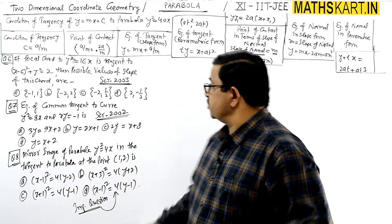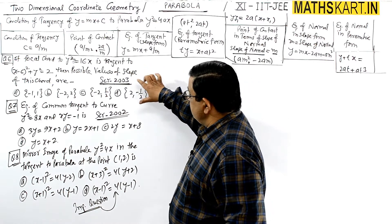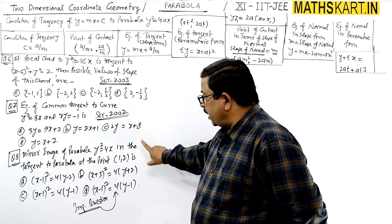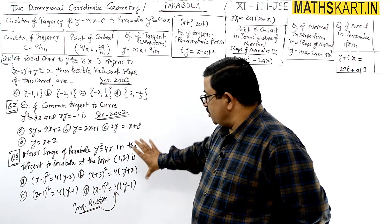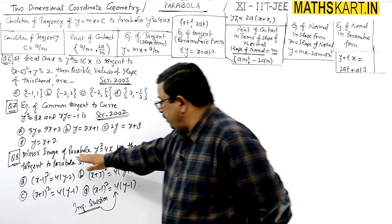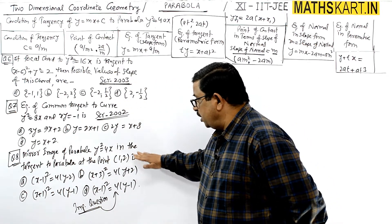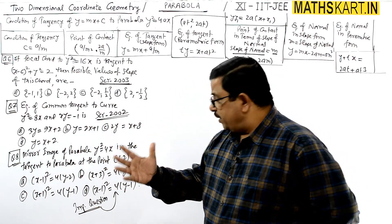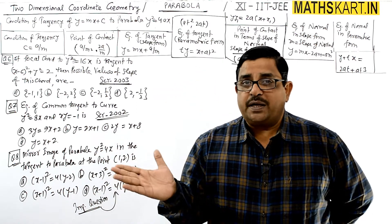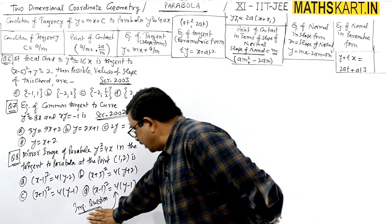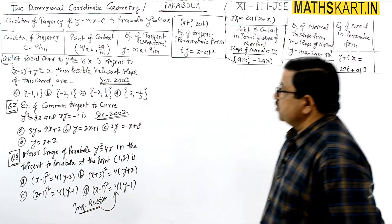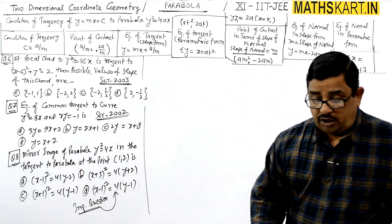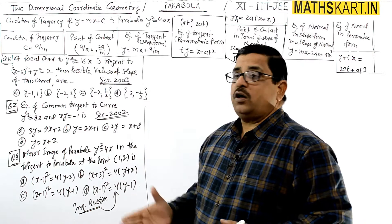Three more important questions: Question 6 from screening 2003, Question 7 from screening 2002. This is a most important question — we require the mirror image of the parabola, where the tangent to the parabola at this point is drawn. Question 6: if focal chord — focal chord means chord passing through the focus.